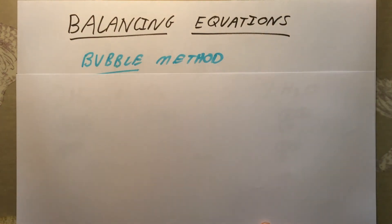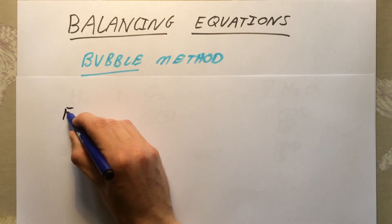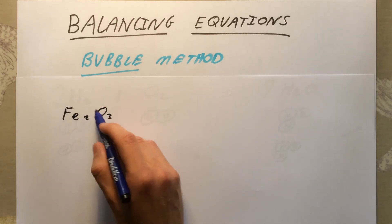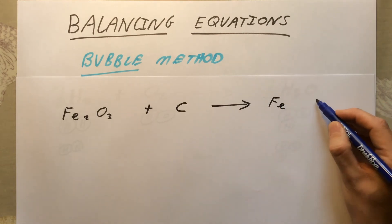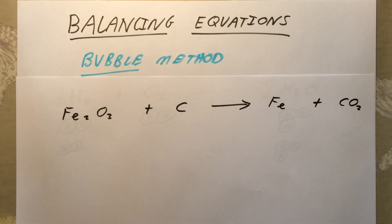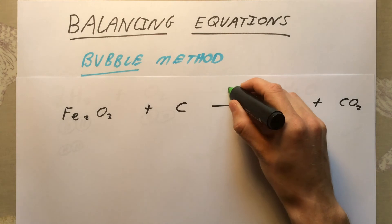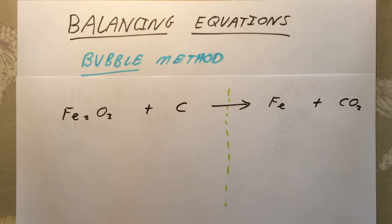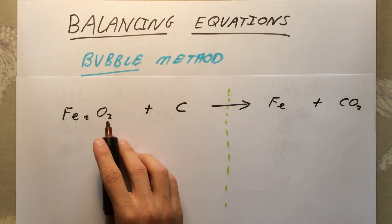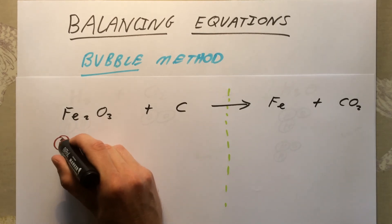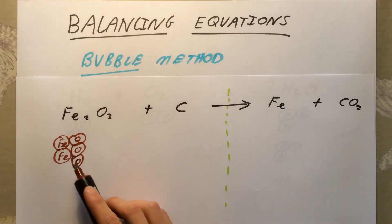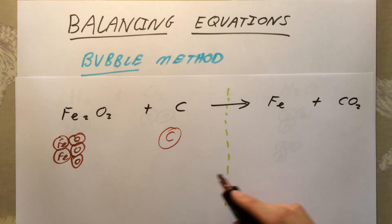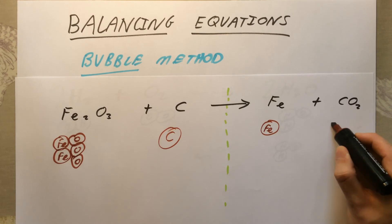The second example is more difficult, but the same method makes it straightforward. This is the reaction of iron oxide, Fe₂O₃, which we reduce using carbon, C. From this process we get pure iron, Fe, and we also form carbon dioxide, CO₂. Drawing the dashed line again, I'll draw Fe₂O₃ as two iron atoms and three oxygen atoms, carbon as a single C atom, iron as a single Fe atom, and CO₂ as one carbon joined to two oxygens.